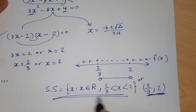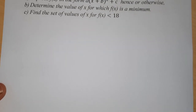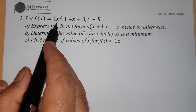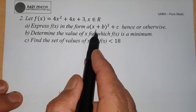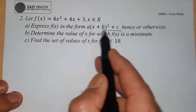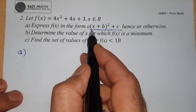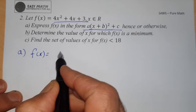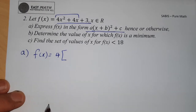Now for Question 2 of Activity 1: f(x) = 4x² + 4x + 3, where x belongs to ℝ. Express f(x) in canonical form. Follow the steps: take 4 as a common factor from the first two terms, giving 4(x² + x) + 3. Inside the bracket, rewrite x² + x in completed-square form.